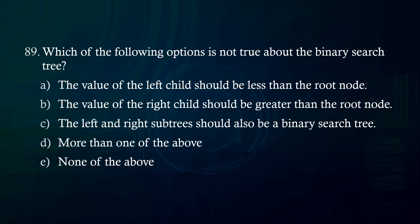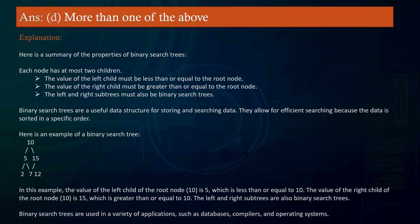Which of the following options is not true about the binary search tree? A. The value of the left child should be less than the root node. B. The value of the right child should be greater than the root node. C. The left and right subtrees should also be a binary search tree. D. More than one of the above. E. None of the above. Answer: More than one of the above. Properties of BSTs: each node has at most two children; the left child must be less than or equal to the root; the right child must be greater than or equal to the root; subtrees must also be binary search trees.